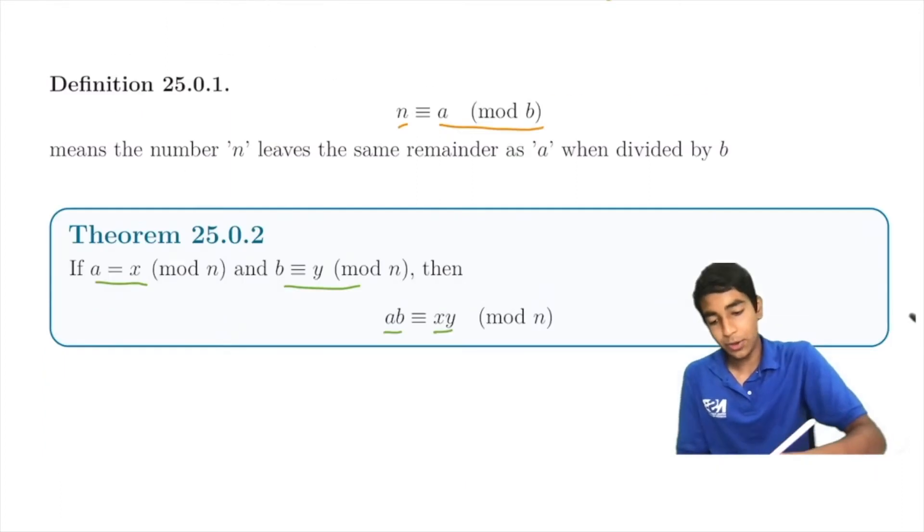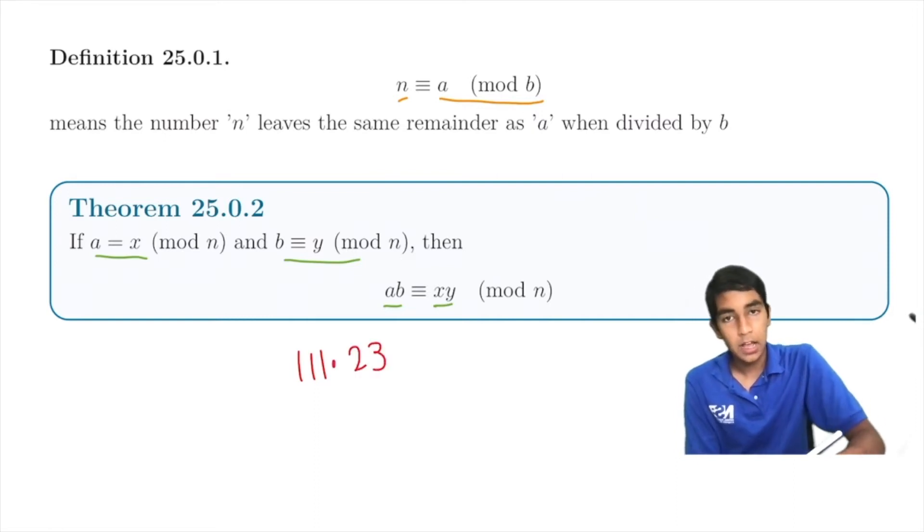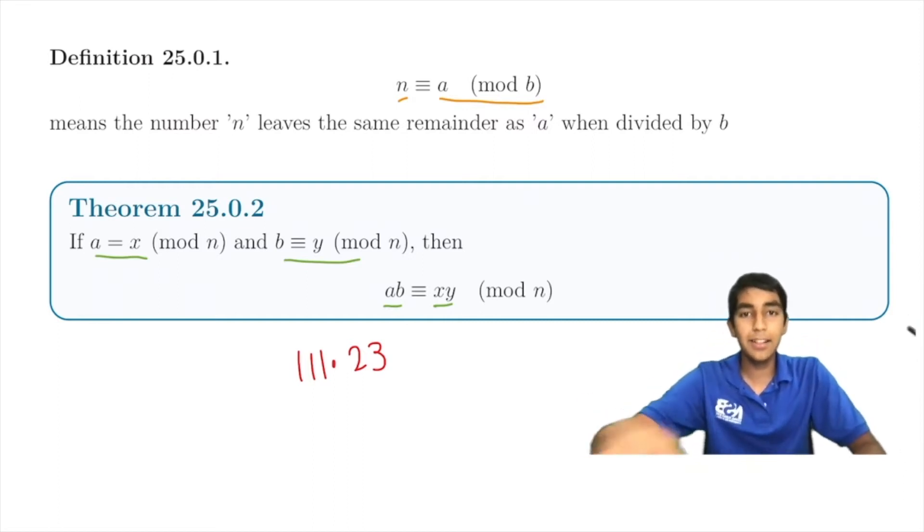Now this may seem a little weird, but essentially what this is saying is, let's say you want to find the remainder when 111 times 23 is divided by 11. You can multiply it all out and divide, that's a bad way, or you can do something a little shorter.